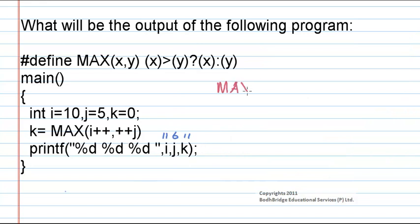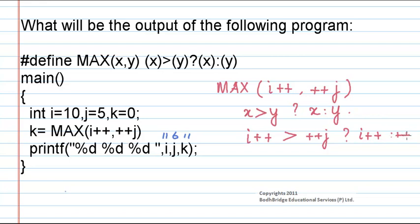Here the MAX function is called as follows: MAX of i plus plus comma plus plus j. The definition of this macro is x greater than y question mark x colon y. Now whenever this macro is called within the function, the definition will be replaced here. So that is i plus plus greater than plus plus j question mark i plus plus colon plus plus j.